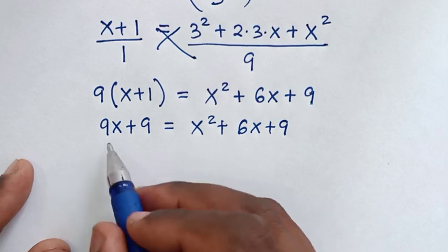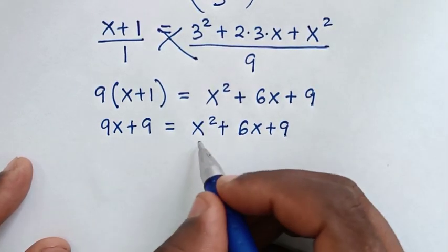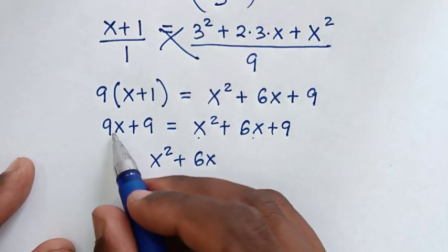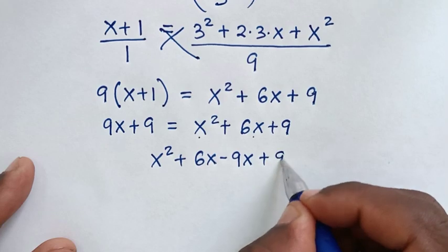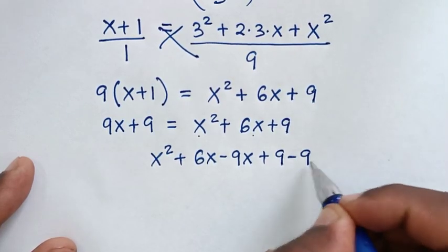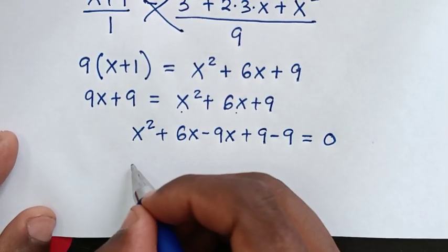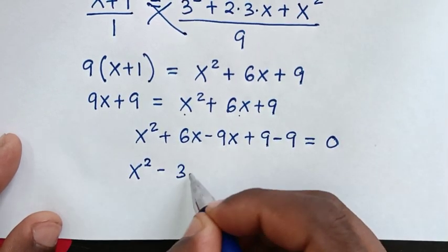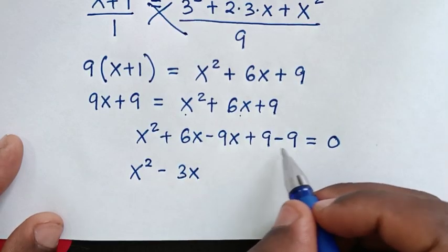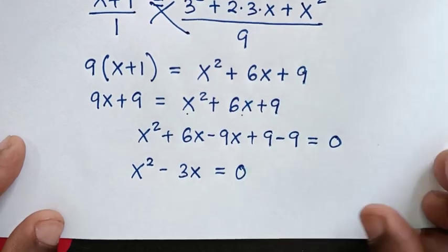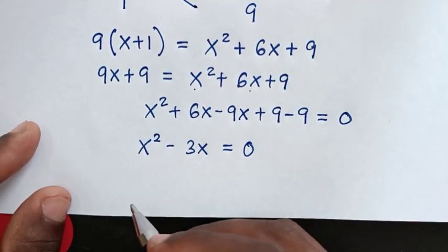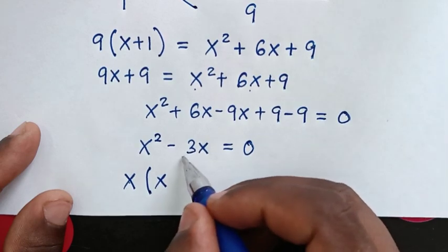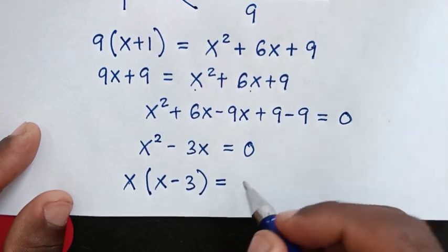We rearrange to form a quadratic equation. Bringing all terms to one side: x squared plus 6x minus 9x plus 9 minus 9 equals 0, which simplifies to x squared minus 3x equals 0. Factoring out x gives: x times (x minus 3) equals 0.